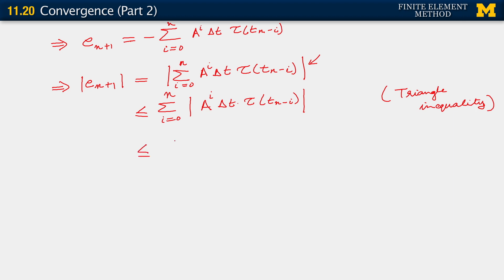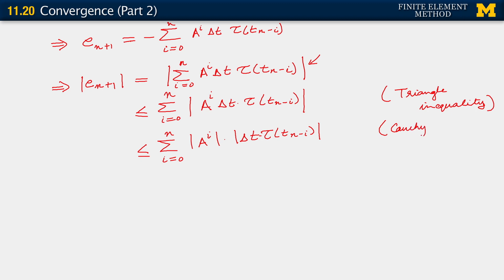There is more. We can say further that our most recent right-hand side is itself bounded from above by another expression. Any absolute value of a product is bounded from above by the product of the absolute values. This result is called the Cauchy-Schwarz inequality.